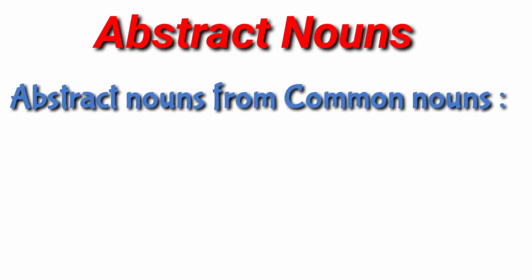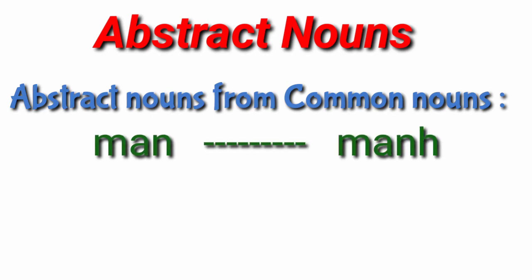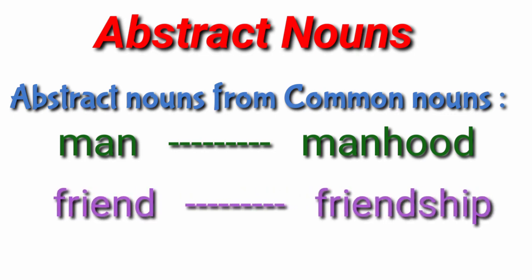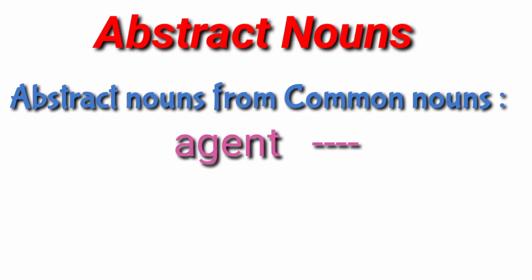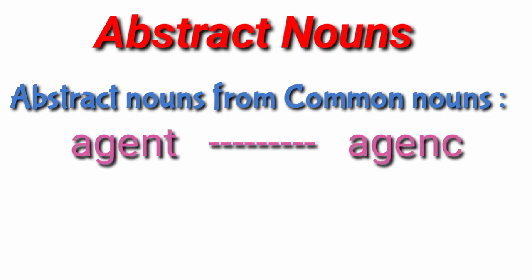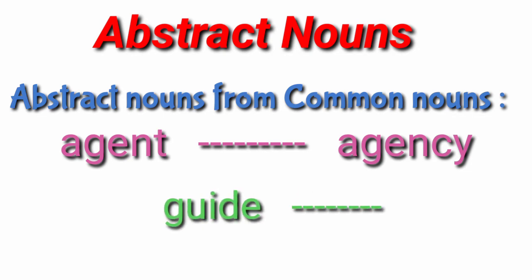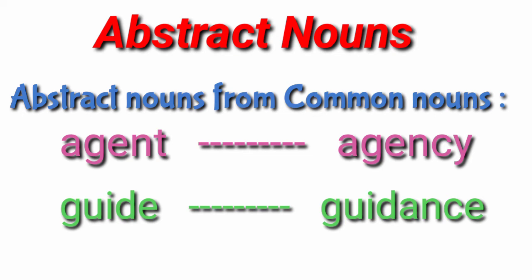Abstract nouns can also be formed from common nouns. For example: Man is a common noun and manhood is the abstract noun. Friend is a common noun and friendship is the abstract noun. Agent is a common noun and agency is the abstract noun. Guide is a common noun and guidance is the abstract noun.